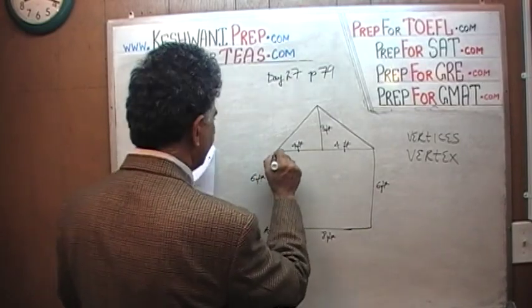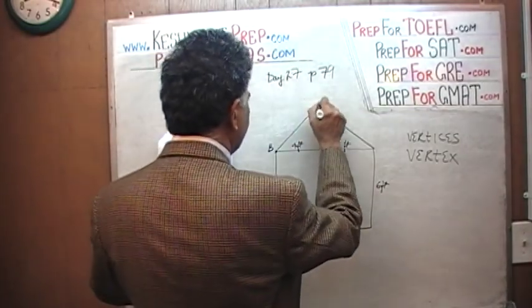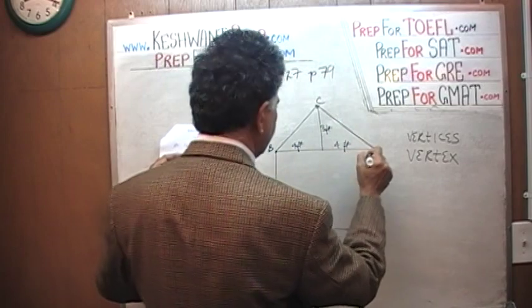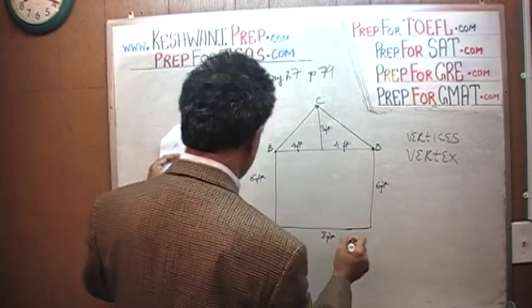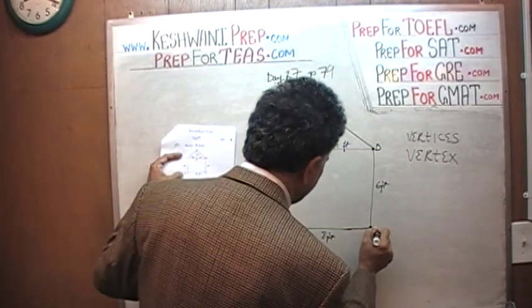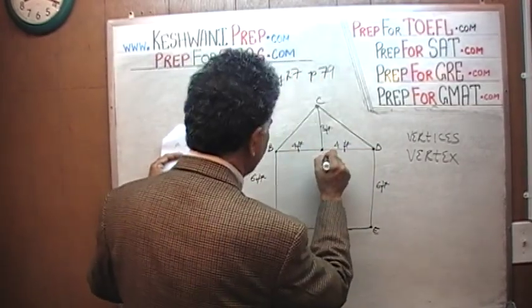Let's do that: A, B, C, D, E. And finally, we are going to call this one A.